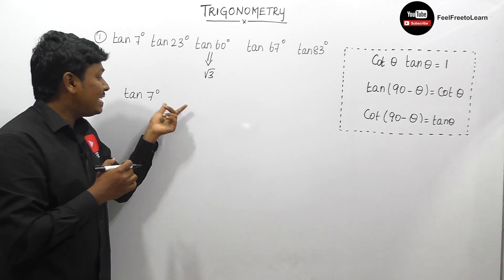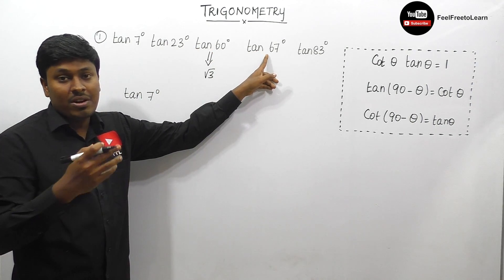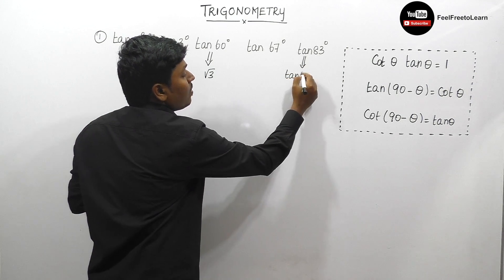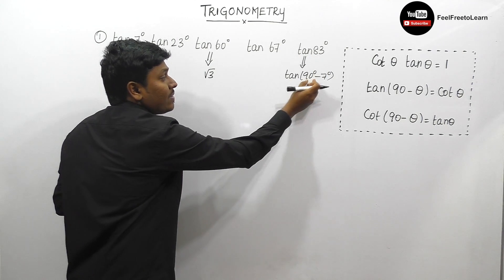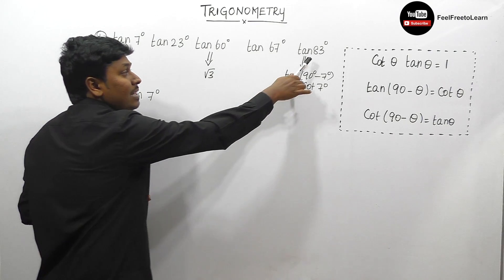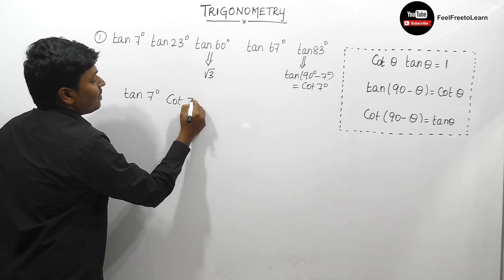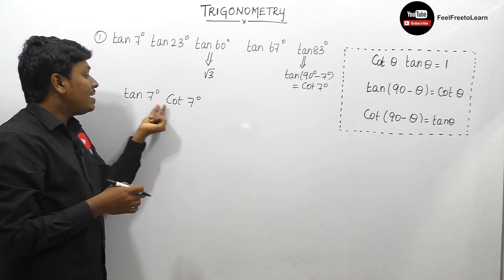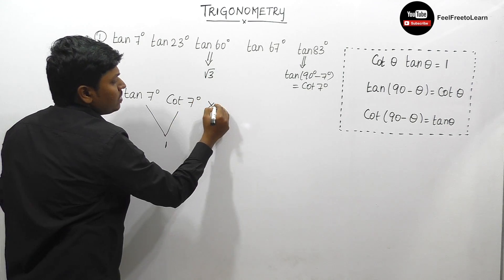So tan 83° = tan(90° − 7°) = cot 7°. I have now converted the expression so that tan 7° and cot 7° appear together. Since cot θ · tan θ = 1, those two multiply to 1. We still have √3 from tan 60°.